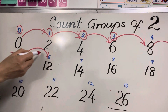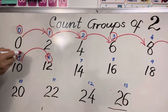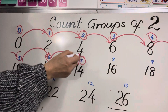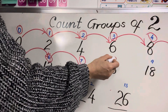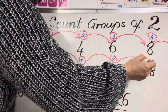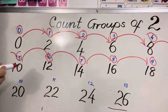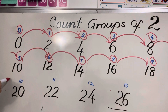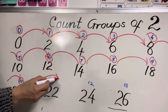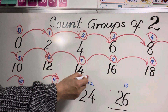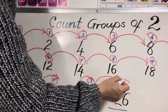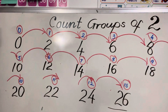6 groups of 2, you jump 6 times — 12. 7 groups of 2, you jump 7 times — 14. 8 groups of 2, you jump 8 times — 16. 9 groups of 2, you jump 9 times. 10 groups of 2, you jump 10 times. 11 groups of 2, you jump 11 times. 12 groups of 2, you jump 12 times. And the last one: 13 groups of 2, you jump 13 times.